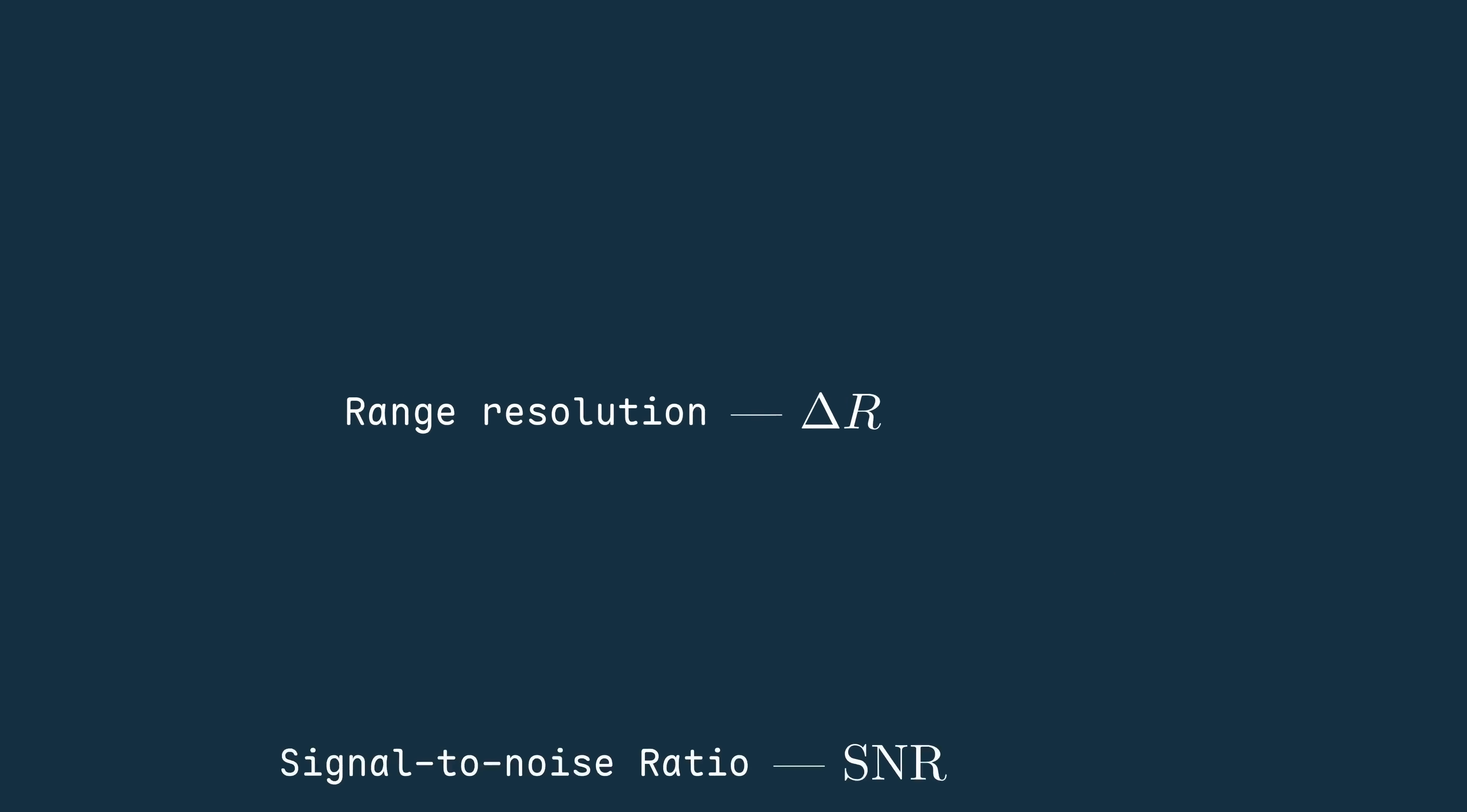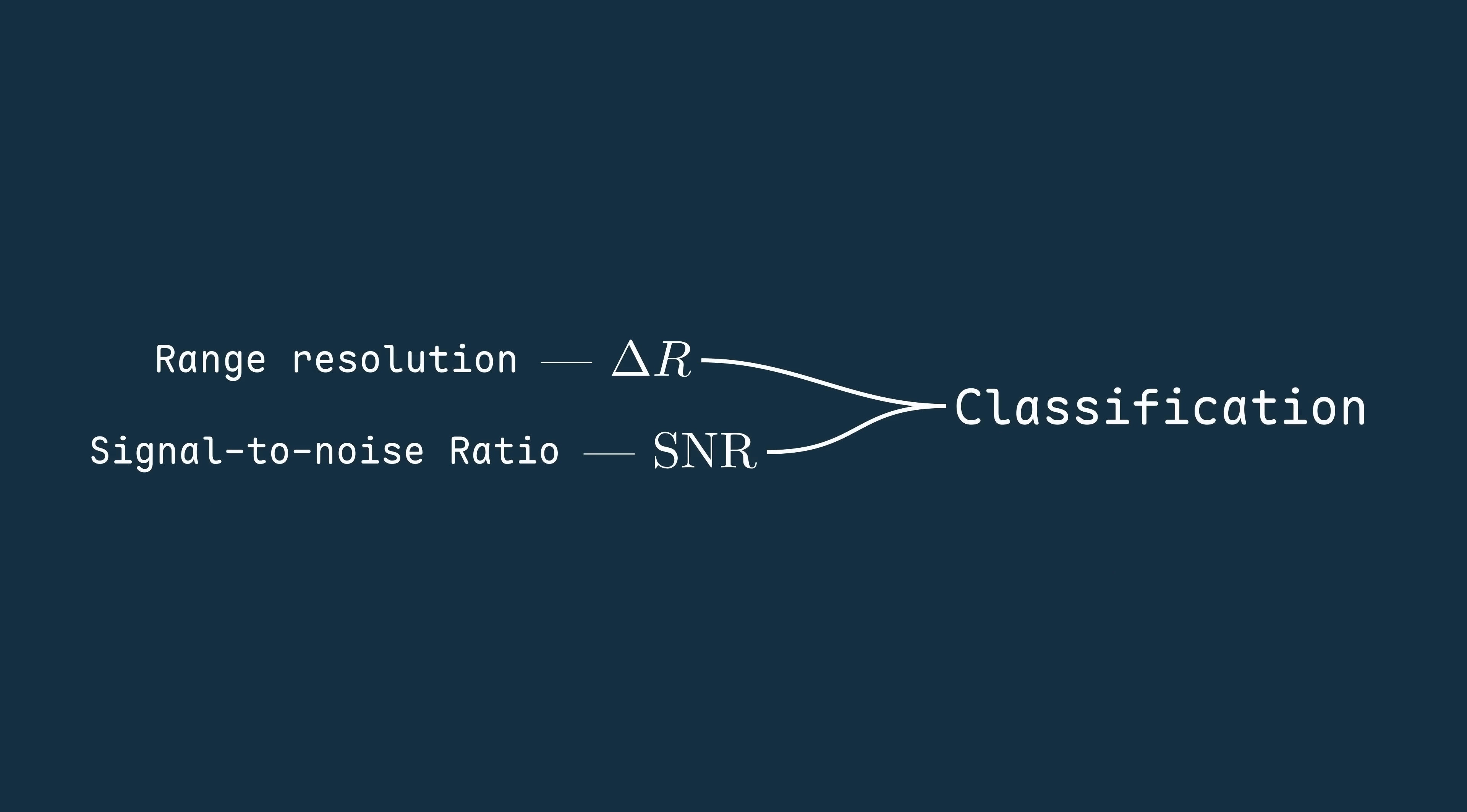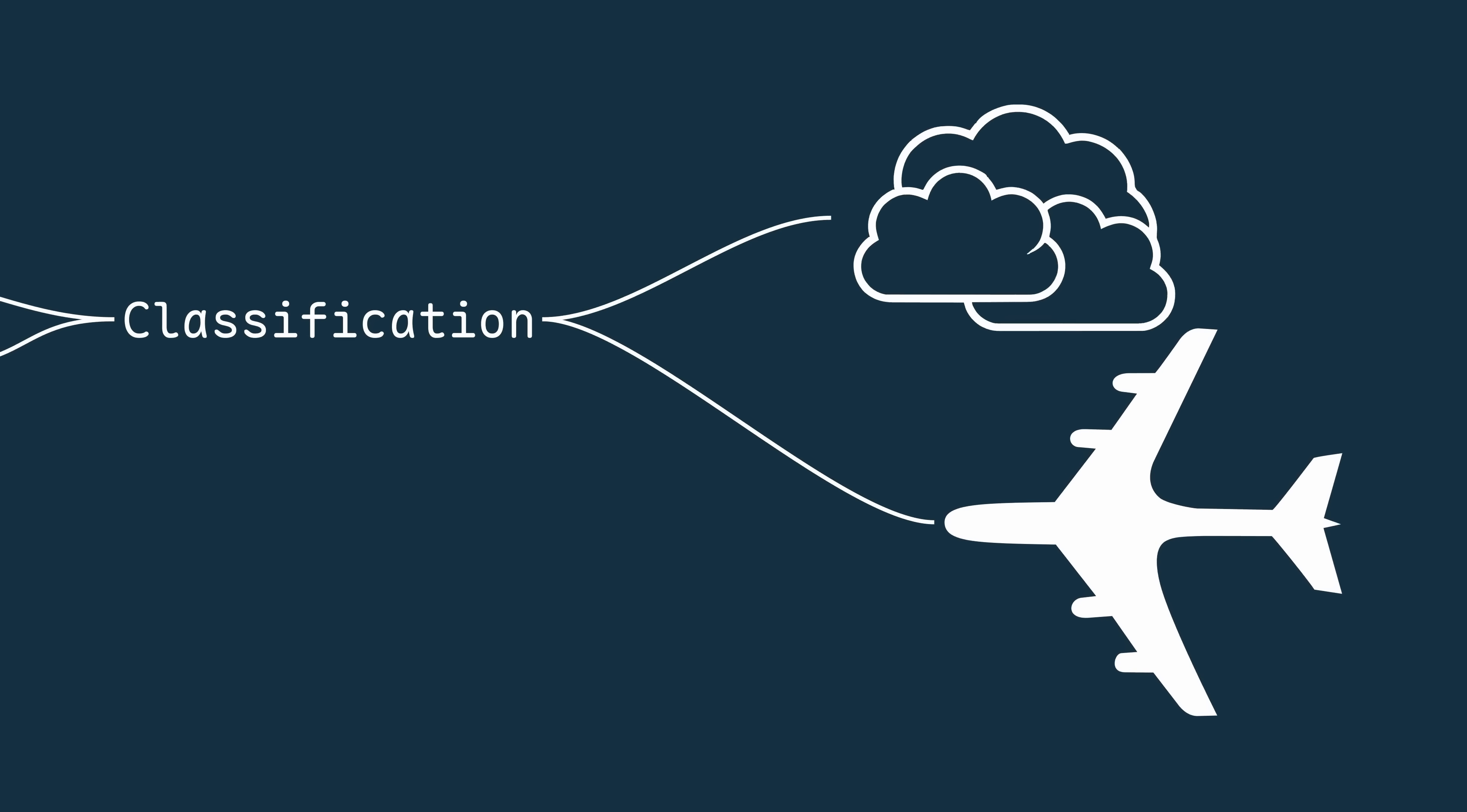Both of these are crucial for identifying and classifying targets, whether that's hard targets like planes or volumetric targets like clouds. Unfortunately though, improving one can hurt the other.